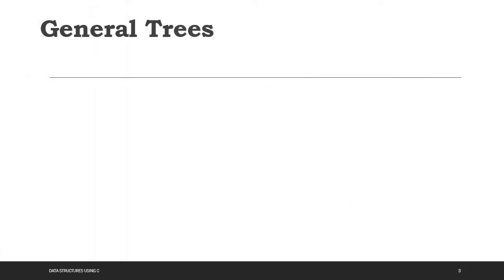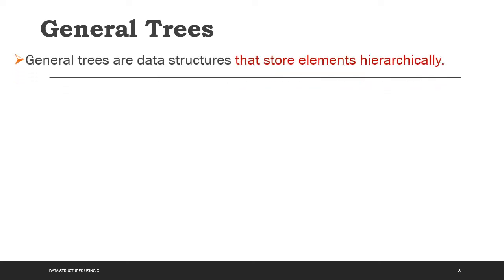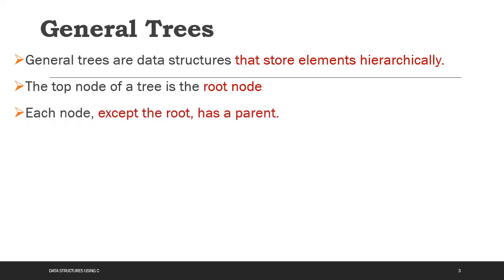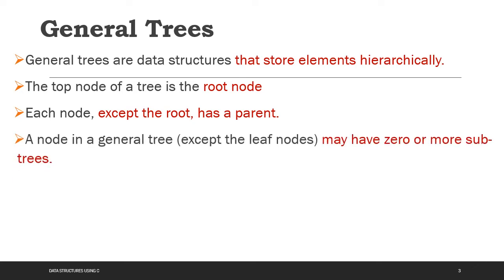We will see what a general tree is first. General trees are data structures that store elements hierarchically. The top node of the tree is the root node. Each node except the root has a parent — the root has no parent. All nodes in a general tree may have zero or more subtrees, except the last node, which is called the leaf node or terminal node.